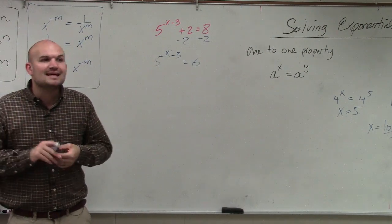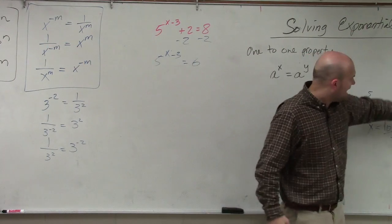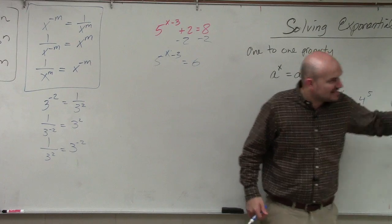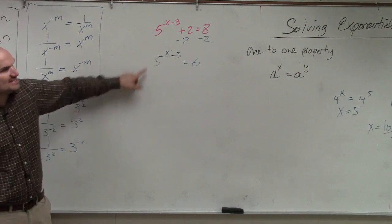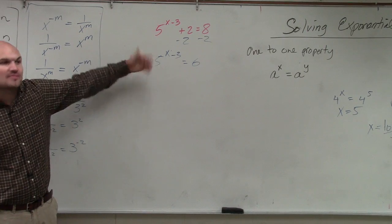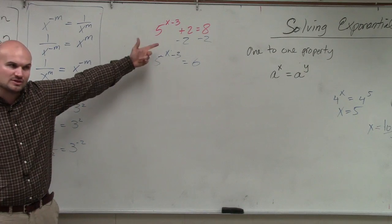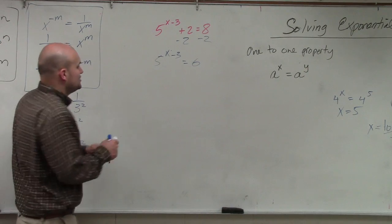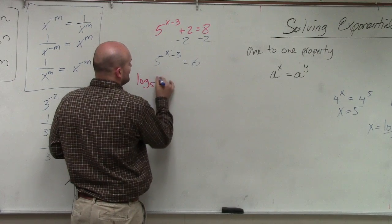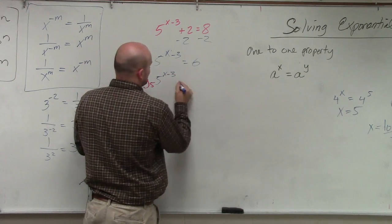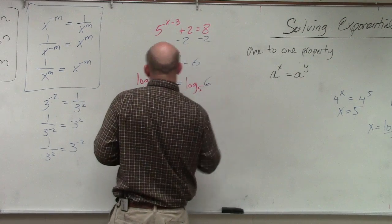So what we can do, though, is take the log. And remember, using my properties, if I take the log of the base of the same as the 5, then I can eliminate that and it's just going to be equal to my power, which is x minus 3. So what I'll do is I'll take log base 5 of 5 raised to the x minus 3 equals log base 5 of 6.